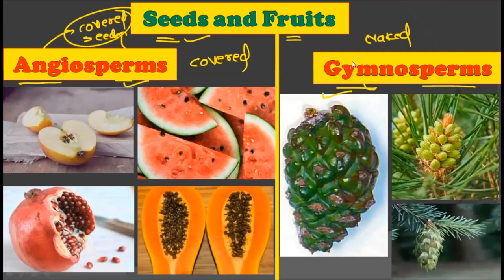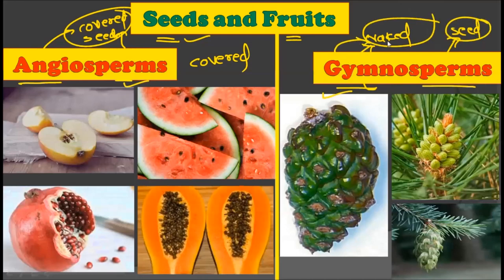Gymnos stands for naked and sperma stands for seed, so gymnosperm literally means naked seed. While the word angiosperm literally means covered seed.